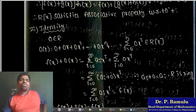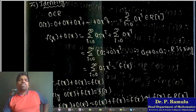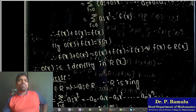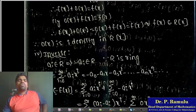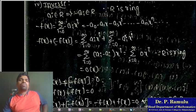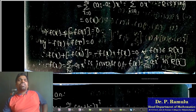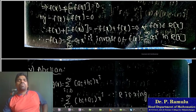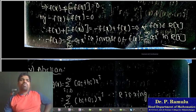Identity property: 0(x) = sum 0·x^i serves as the additive identity; f(x) + 0(x) = f(x) and 0(x) + f(x) = f(x). Therefore 0(x) is the identity element in R[x]. Inverse property: since a_i belongs to R, -a_i also belongs to R. Taking -f(x) = sum(-a_i)x^i, we get f(x) + (-f(x)) = 0(x) and -f(x) + f(x) = 0(x). Therefore -f(x) is the additive inverse of f(x) in R[x].